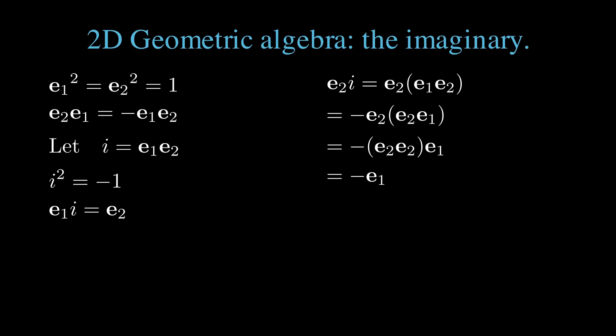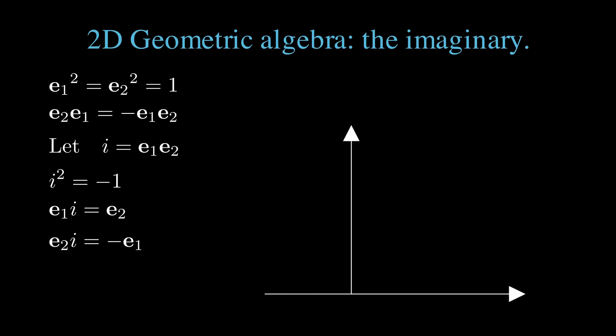We've just seen that right multiplication of e1 by i rotates that to e2, e2 equals e1 i. Further multiplication rotates e2 to e2 i, which is minus e1.